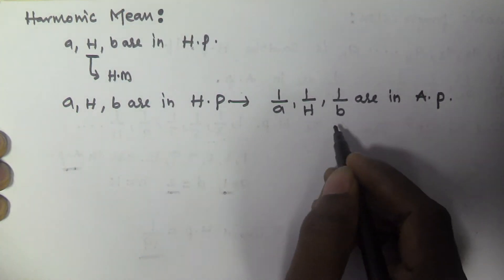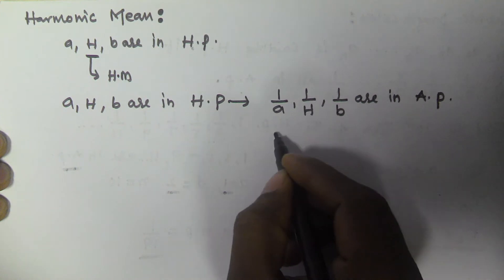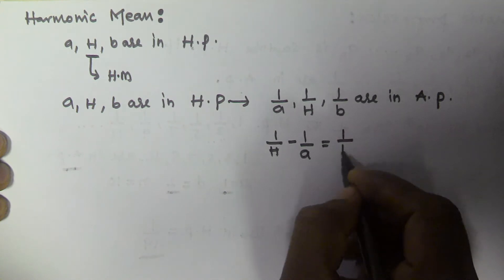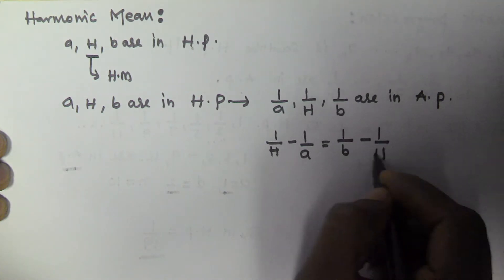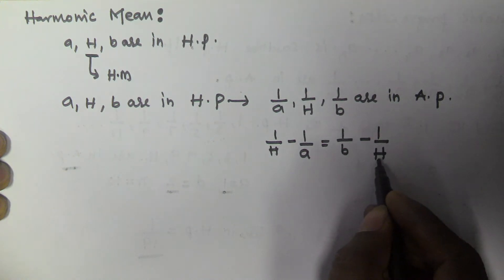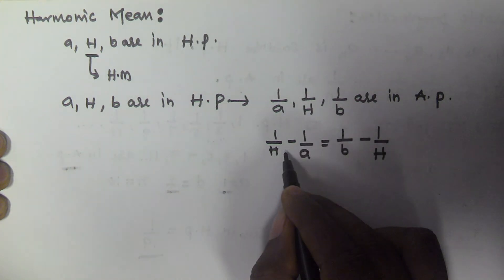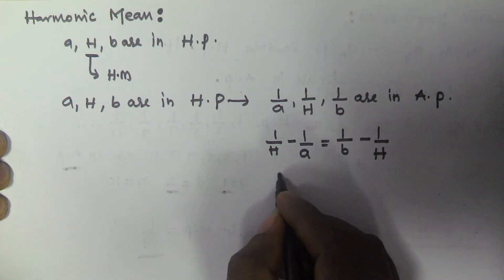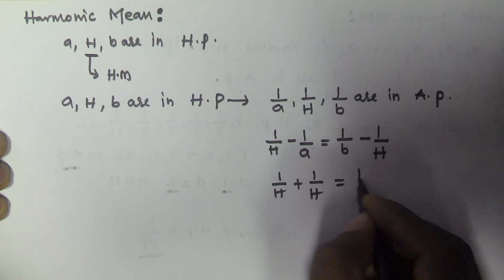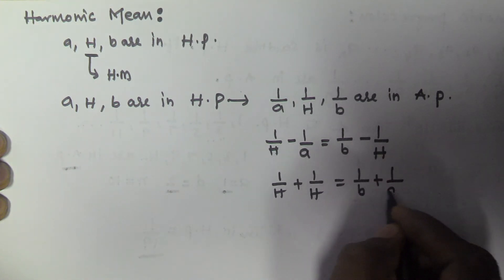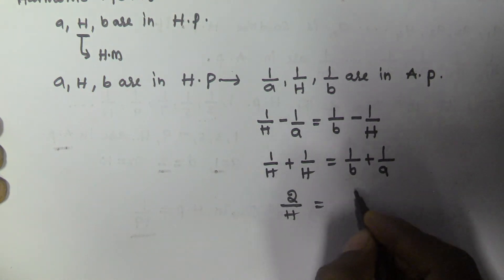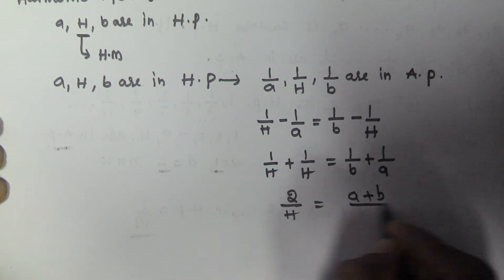Since these are in arithmetic progression, the common difference is the same. So 1/h minus 1/a equals 1/b minus 1/h. Bringing 1/h to the left-hand side and 1/a to the right-hand side, we get 2/h equals (a + b) / ab.